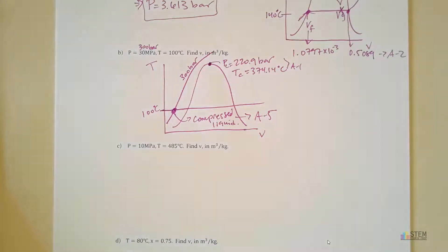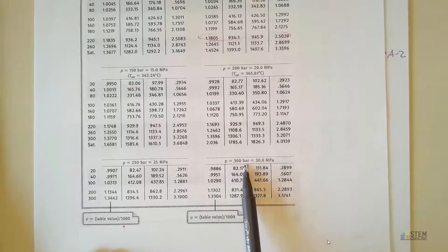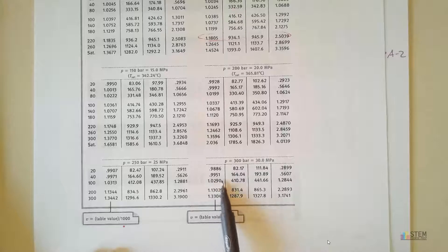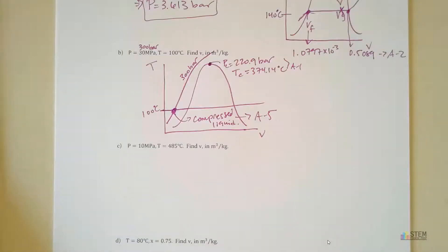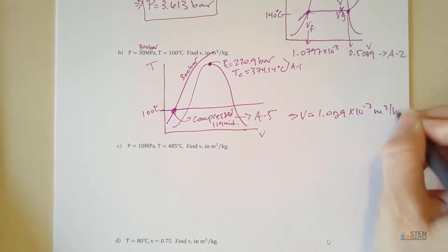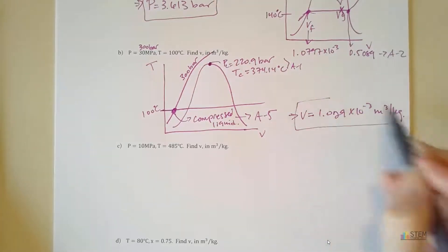Here is Table A5, the compressed liquid table. For a temperature of 100°C and a pressure of 300 bar, we find the specific volume value, which needs to be divided by 1,000. So our V = 1.029×10⁻³ m³/kg. That is our specific volume for these compressed liquid conditions.